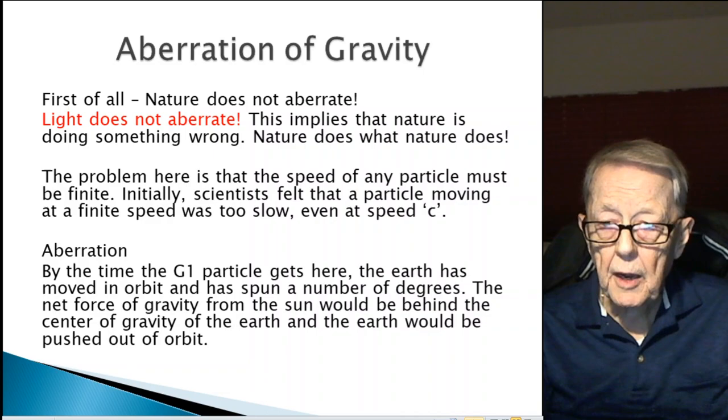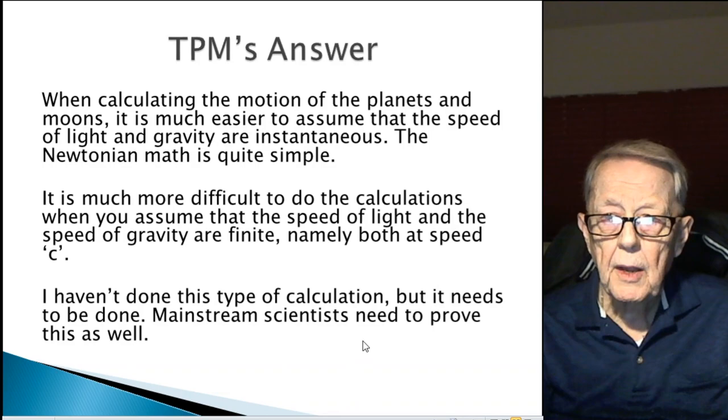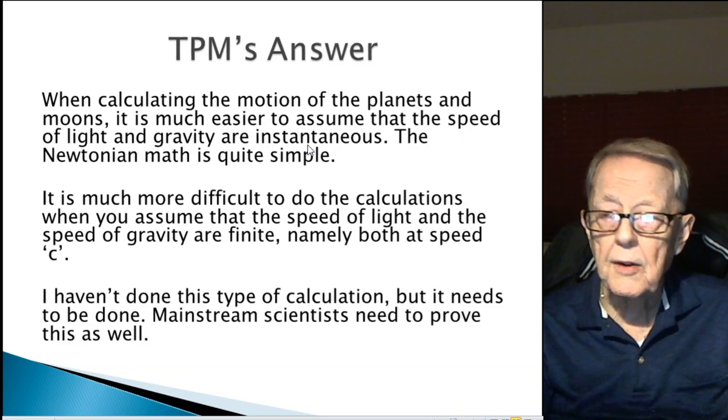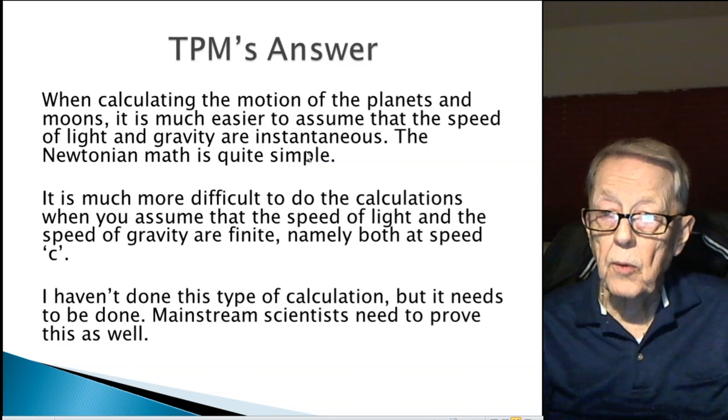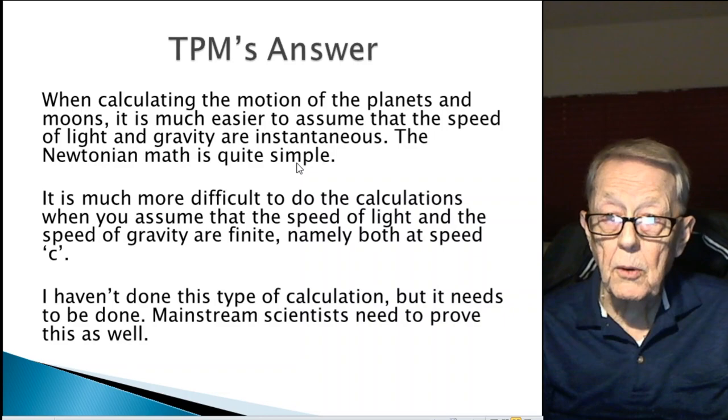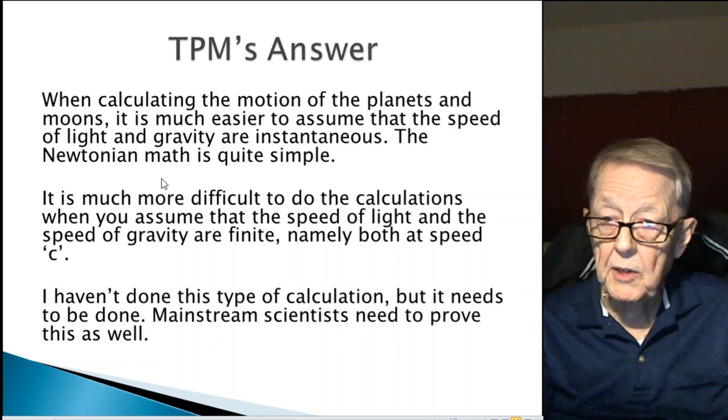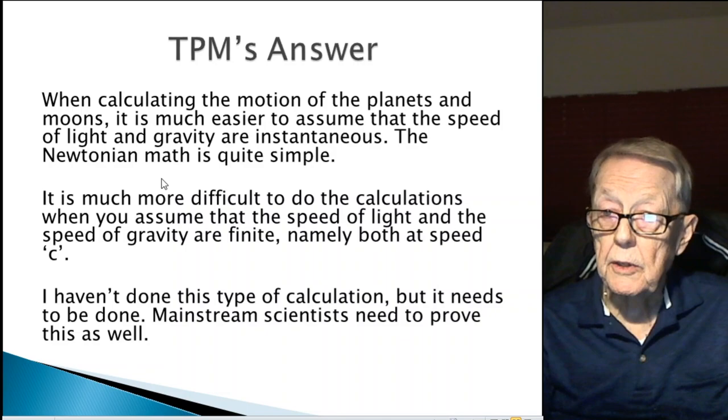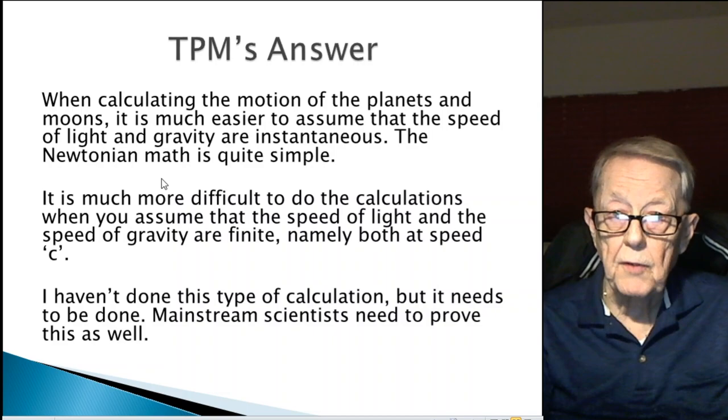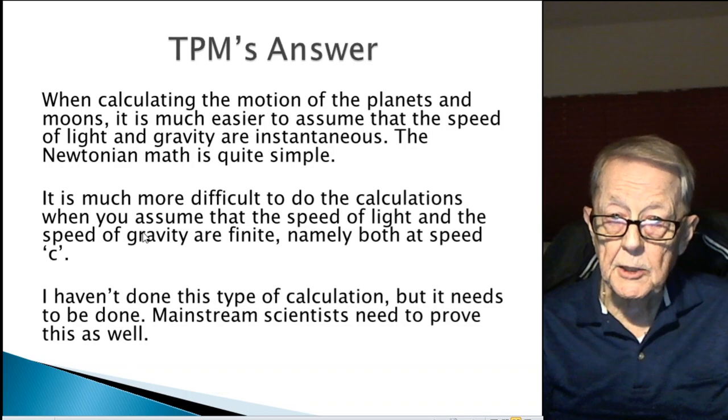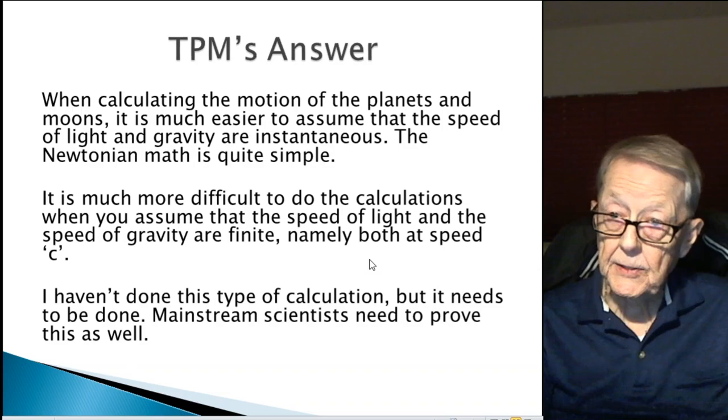Well, that's a little bit, it's not so easy of an answer. And let me go back, I'm repeating myself, when calculating the motion of the planets and the moons, it's much easier to assume that the speed of light and gravity are instantaneous. Where you see it, that's where it is. Where you see it, the effect of gravity on the earth at that instant is there. The only way that can happen is if you assume they're both instantaneous. And then when you apply Newtonian math, it's quite simple. You've got these two objects in space, you calculate the force between them, and you calculate the motion of the earth due to the speed and forces involved. It's an easy way to do it.